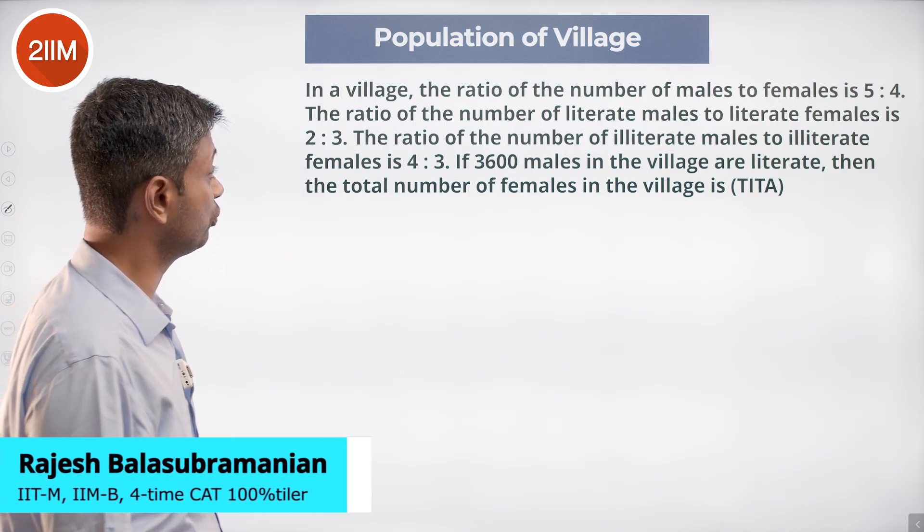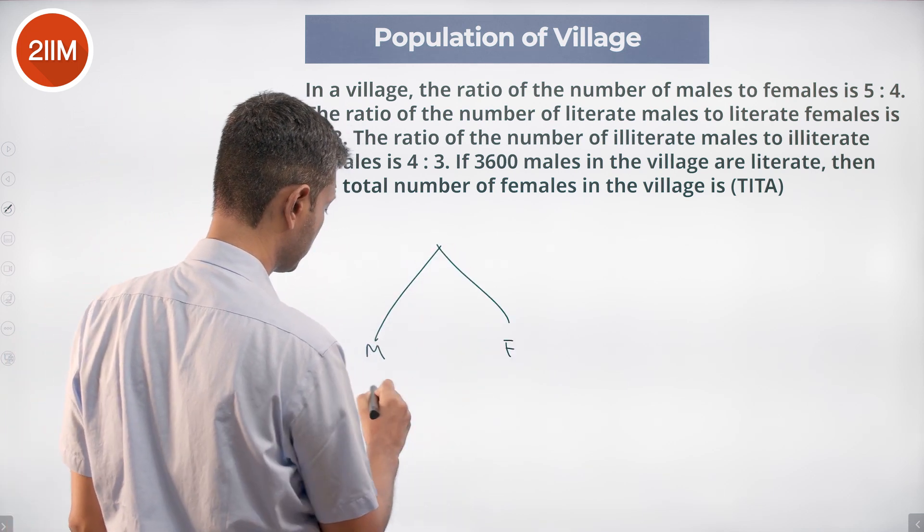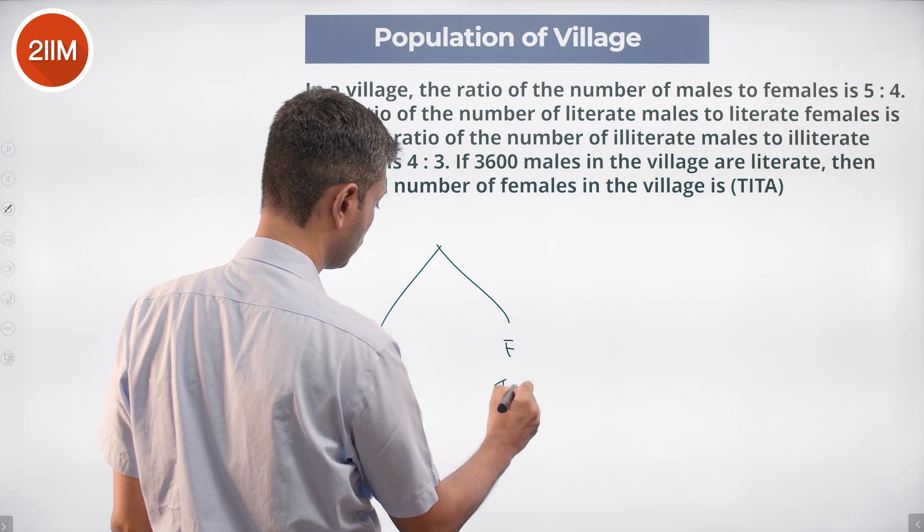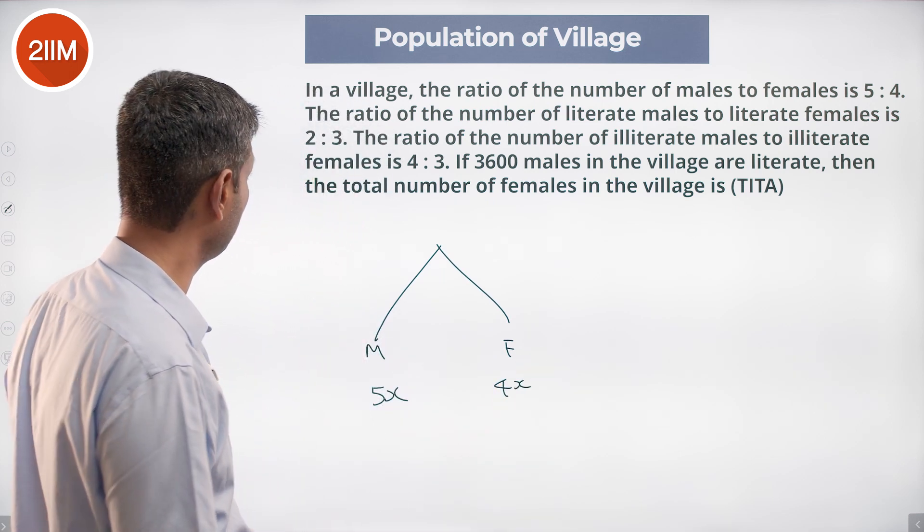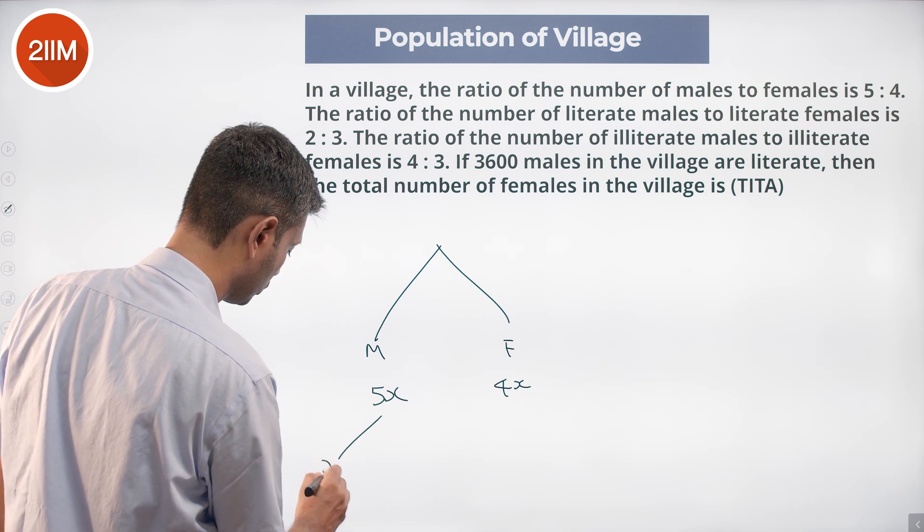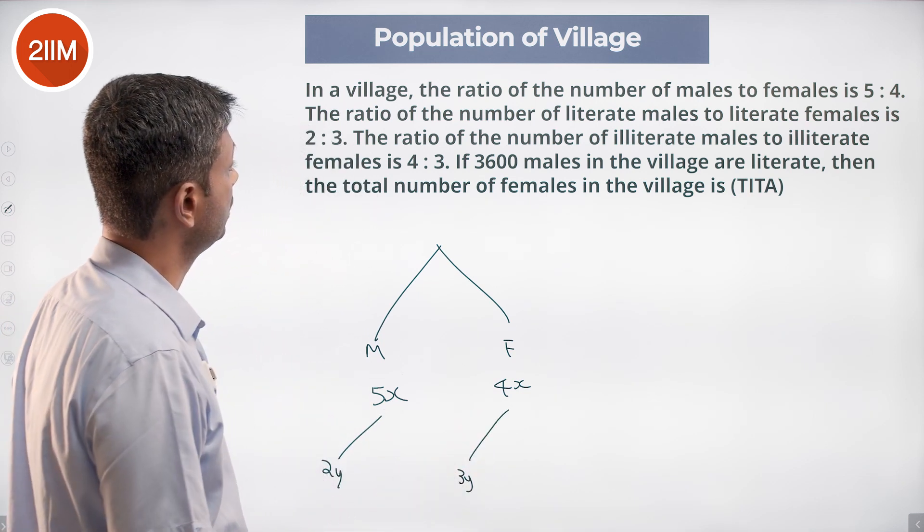In a village, the ratio of number of males to females is 5 to 4. Males 5x, females 4x. The ratio of number of literate males to literate females is 2 to 3.